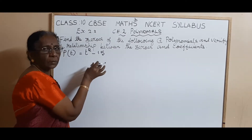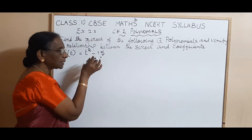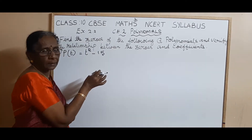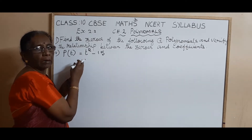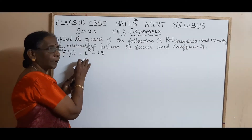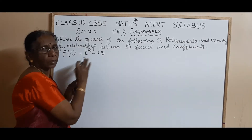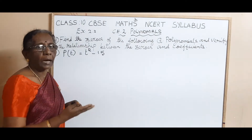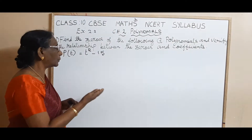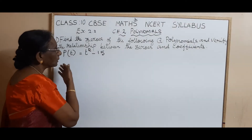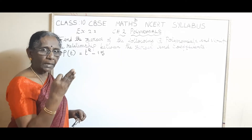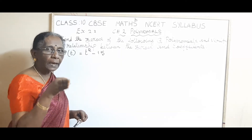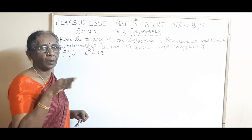Find the zeros of the following quadratic polynomials and verify the relationship between the zeros and coefficients. We are going to do the fifth subdivision. This is the variable in t, so p of t is equal to t squared minus 15.